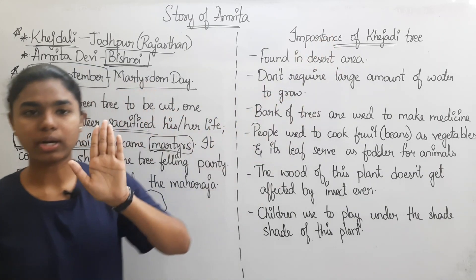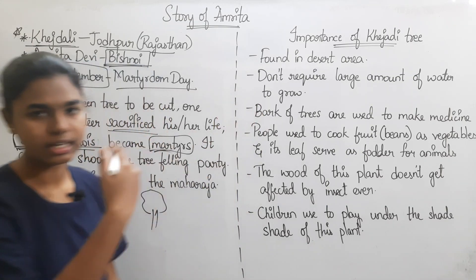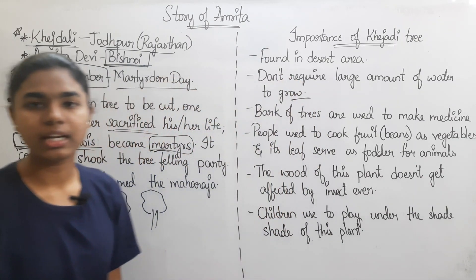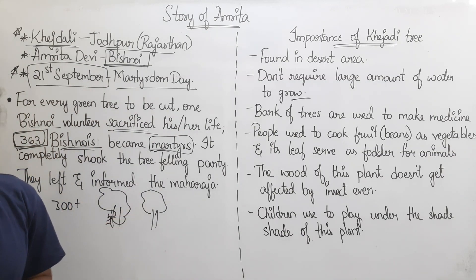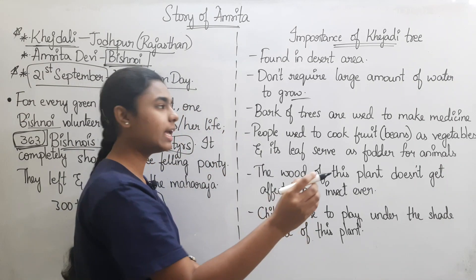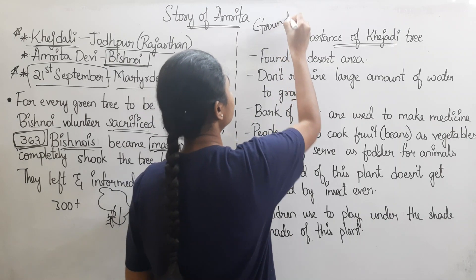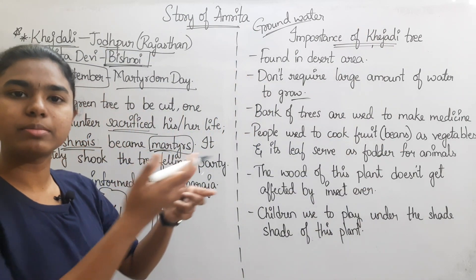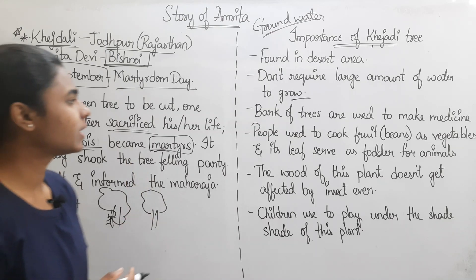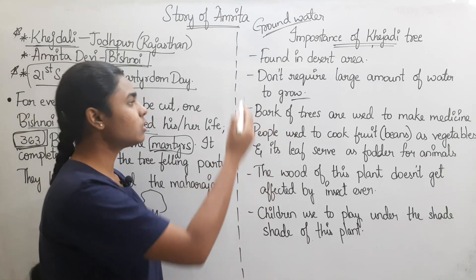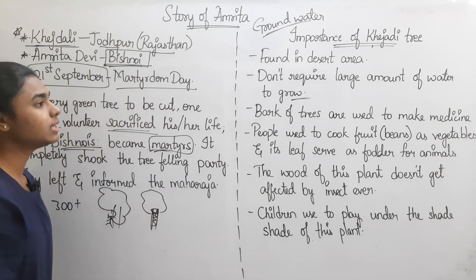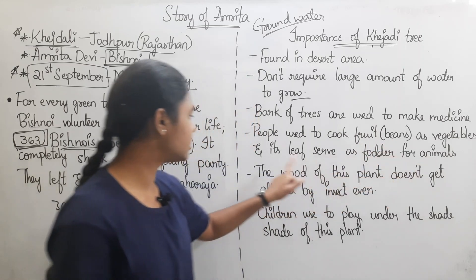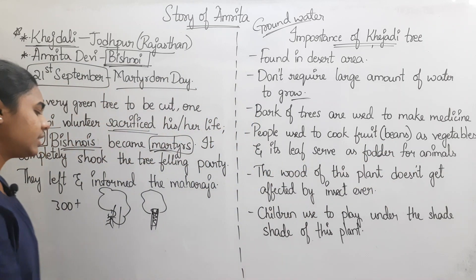What are Khejri trees? They are found in desert areas and do not require a large amount of water to grow. The bark of the trees is used to make medicine. People used to cook the fruit — that is, beans — as vegetables, and its leaves serve as fodder for animals.